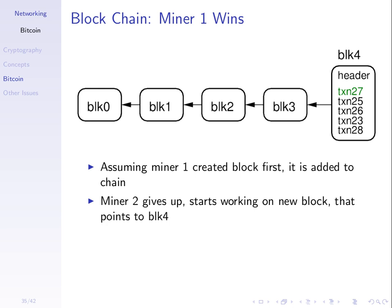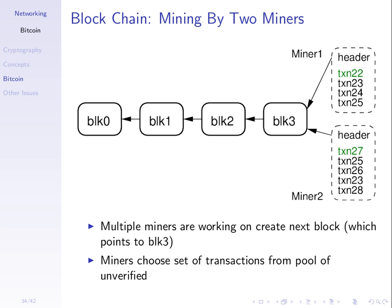Miner two, when they realise miner one created the block first, gives up — there's no longer a motivation to do it. What's the motivation? Whoever creates the next block in the chain gets 25 Bitcoin. Today 25 Bitcoin is about $16,000 US dollars. The person who creates the next block gets a special transaction with no input — the output is you receiving a reward of 25 Bitcoin. That's why people try to create blocks.